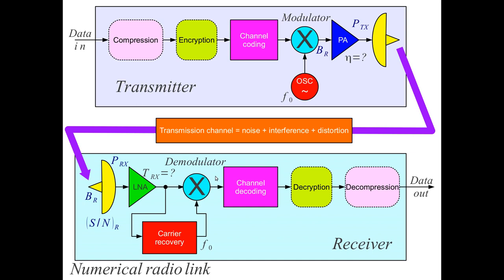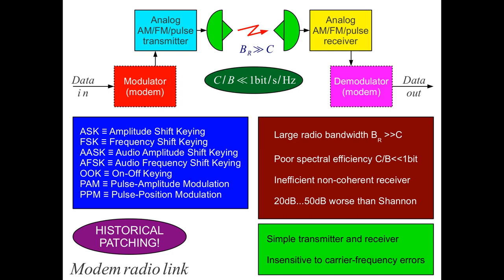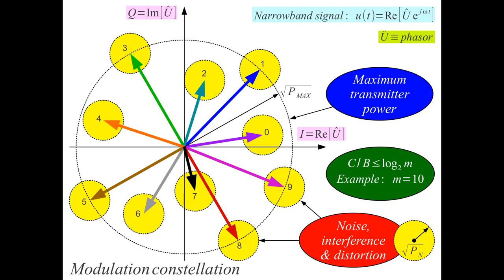With frequency modulation and processing in the receiver — a limiter — we can improve the signal-to-noise ratio at the cost of wider bandwidth. We are going to try to do the same using numerical transmissions: doing better compression, better channel encoding and decoding, to achieve a much better signal-to-noise ratio on our analog data, which is converted to numerical format, compressed, encrypted, and channel coded. The best approach is to look at the signal itself — signals are always narrowband.